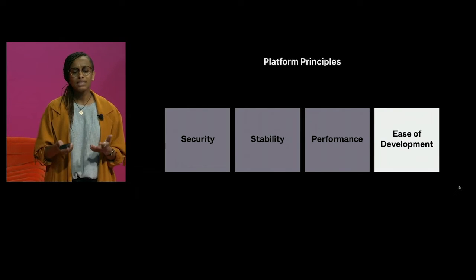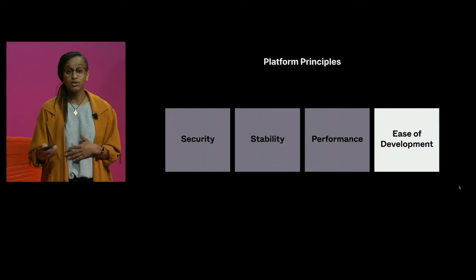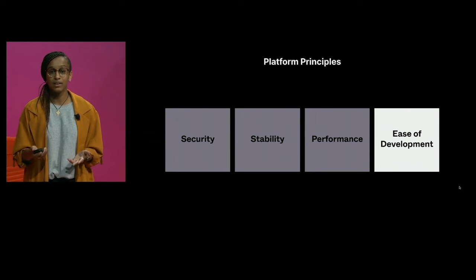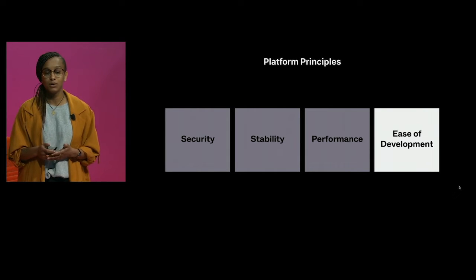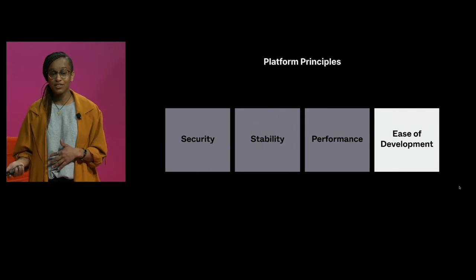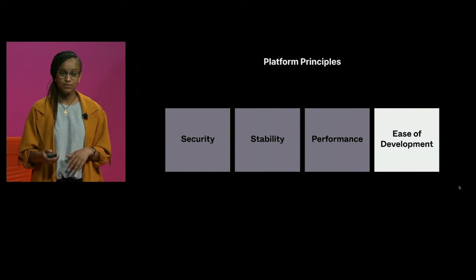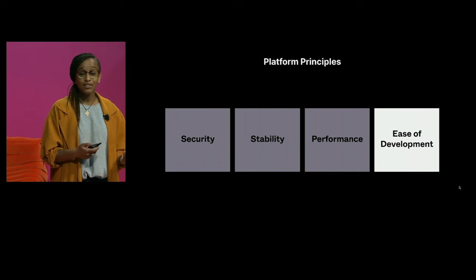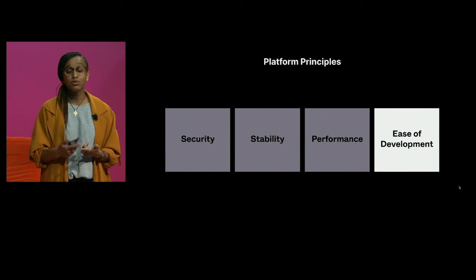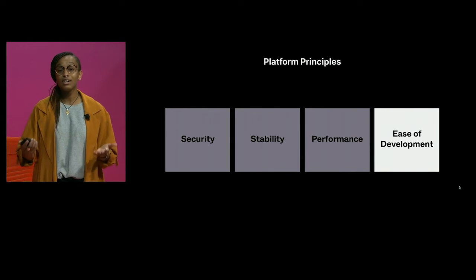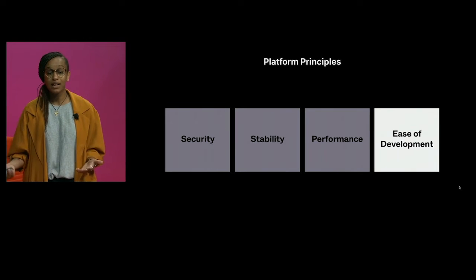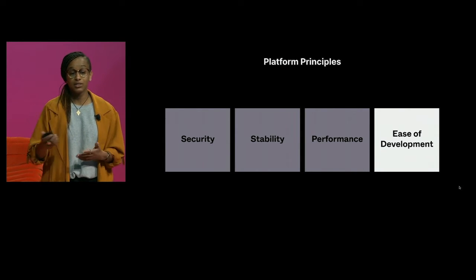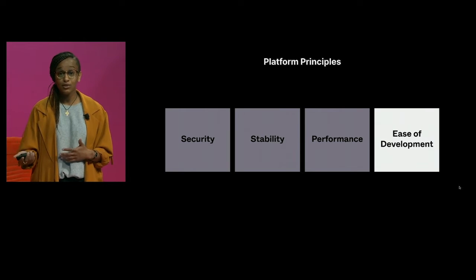Ease of development was critical. We wanted to make it as approachable and accessible as possible for people to build on our platform, striving to make it so that if you could build a simple website, you could build a Figma plugin. We relied on common web technologies — vanilla JavaScript for application logic, HTML and CSS for UIs — so developers already familiar with the web could get up and running quickly. This also let us leverage the existing ecosystem of tools, libraries, tutorials, and documentation. Had we implemented our own API language, we couldn't have benefited from that vast ecosystem, and adoption would have suffered.